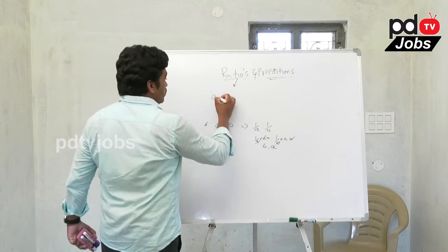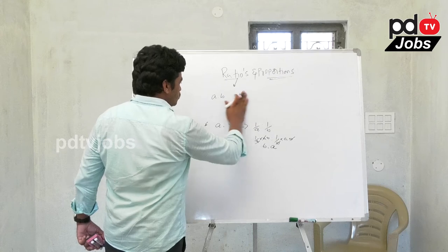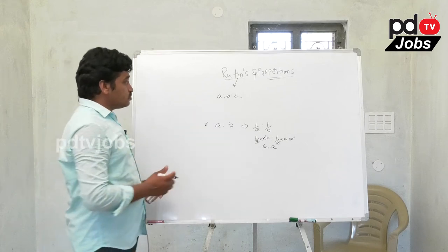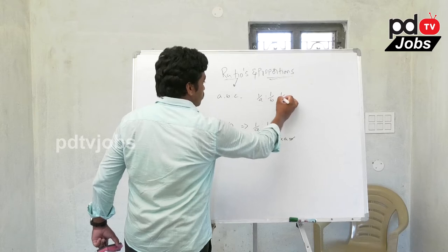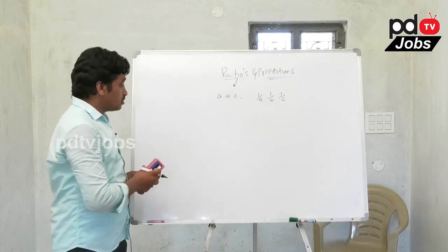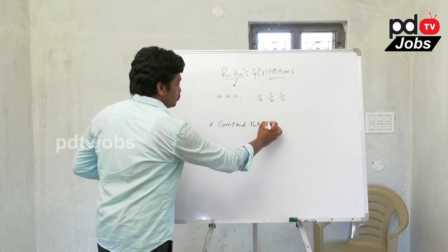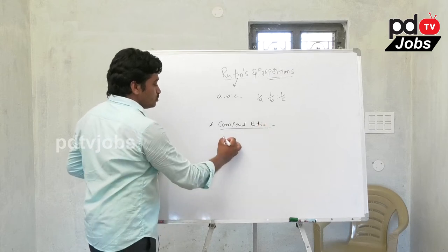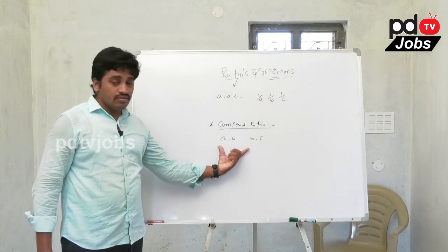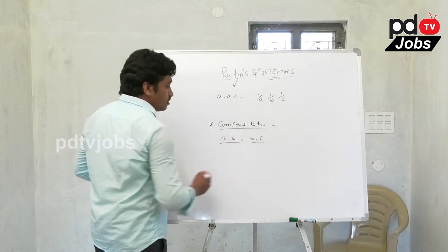Similarly, the inverse ratio of A is to B is to C is 1/A is to 1/B is to 1/C. Next important point: compound ratio. If two ratios are given — A is to B and B is to C — find the compound ratio.